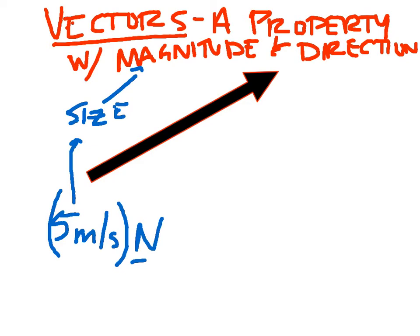Displacement is a vector. Velocity is a vector. Acceleration is a vector. On the flip side of vectors, we have things called scalars. Distance traveled is a scalar. Speed is a scalar. Time is a scalar. A scalar just doesn't have direction with it — direction is not important for a scalar.